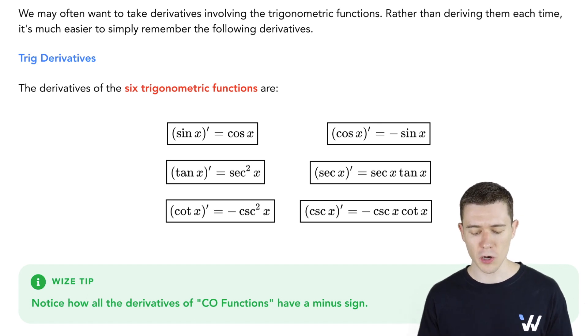The last pair is the secant and the cosecant. The derivative of secant is secant tangent. The derivative of cosecant is minus cosecant cotangent.